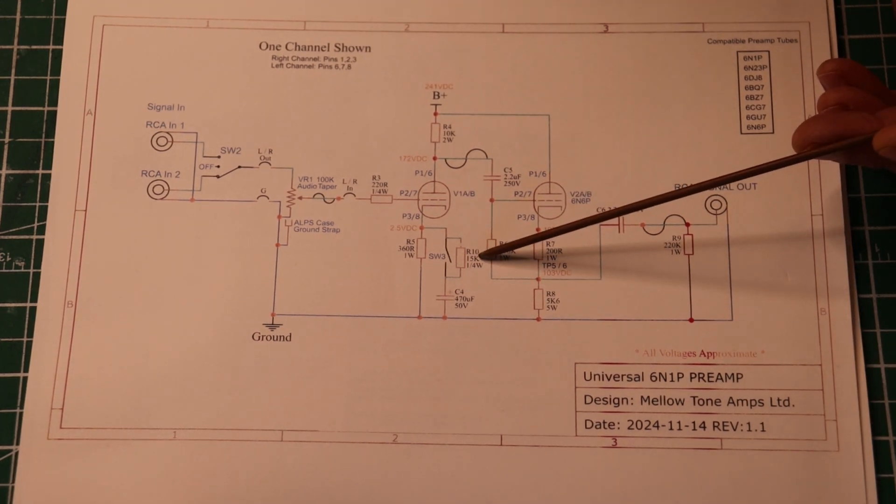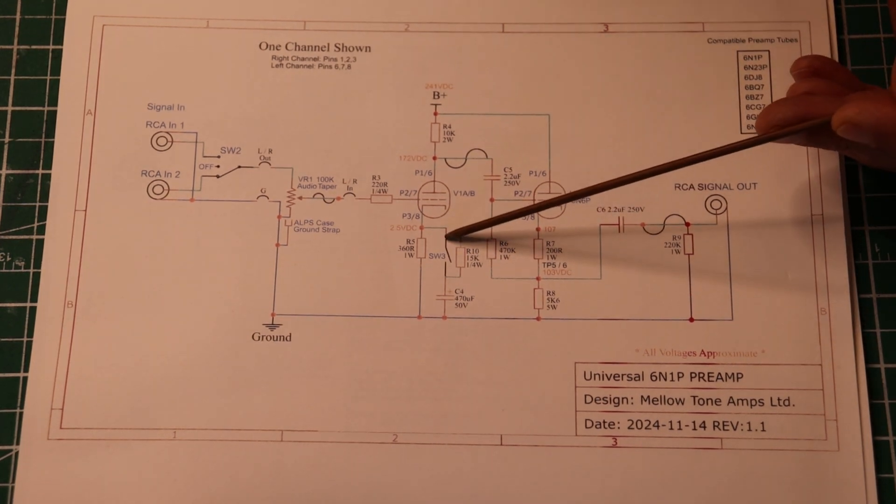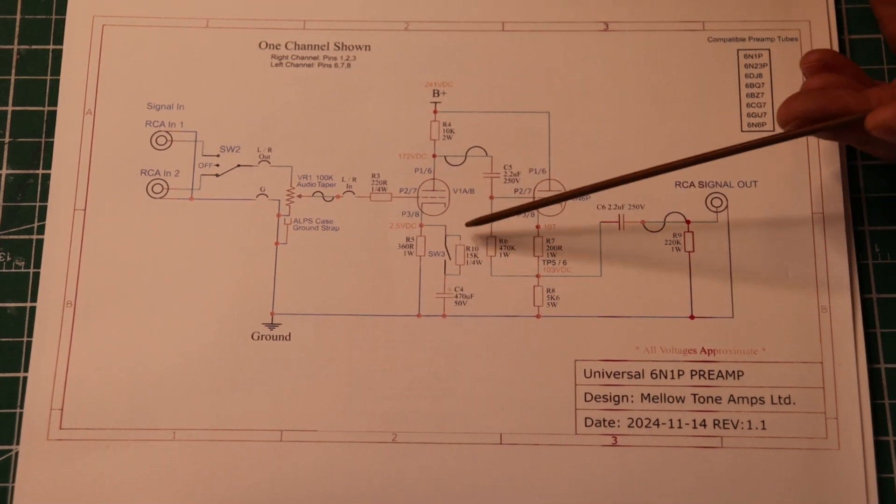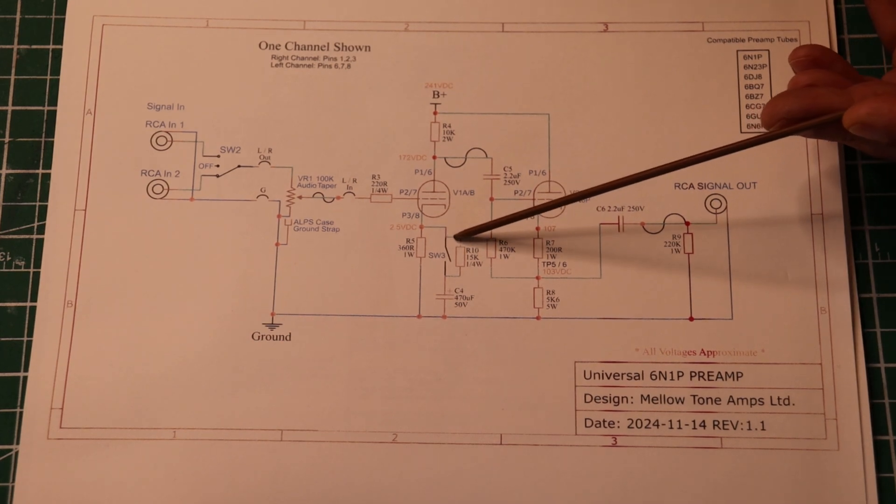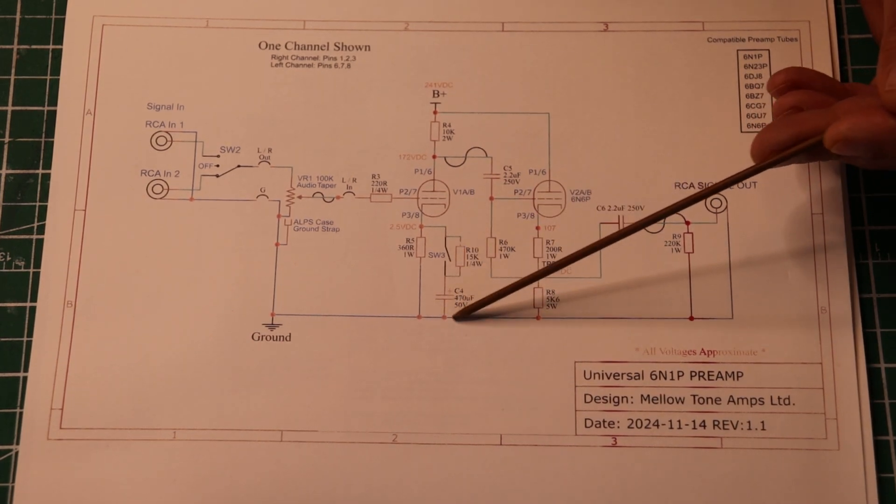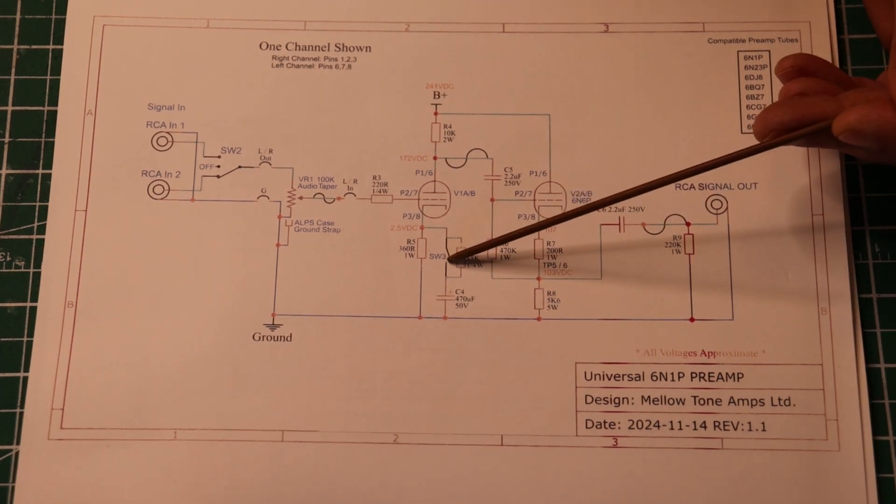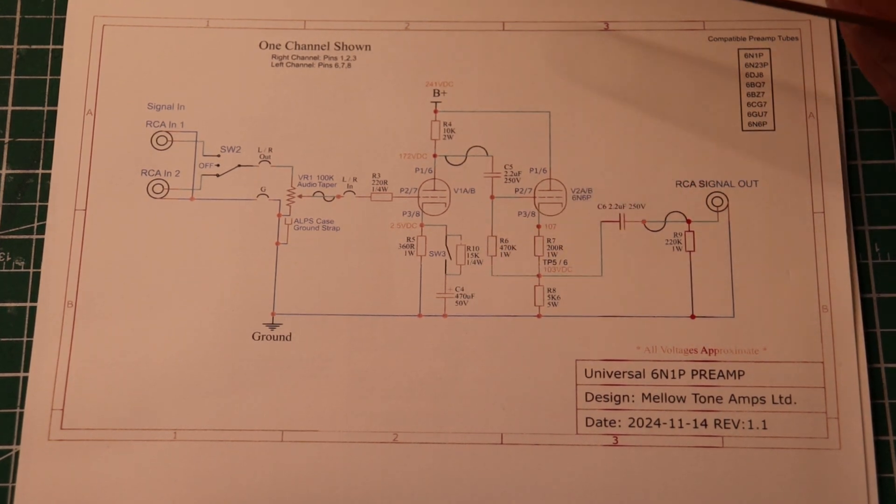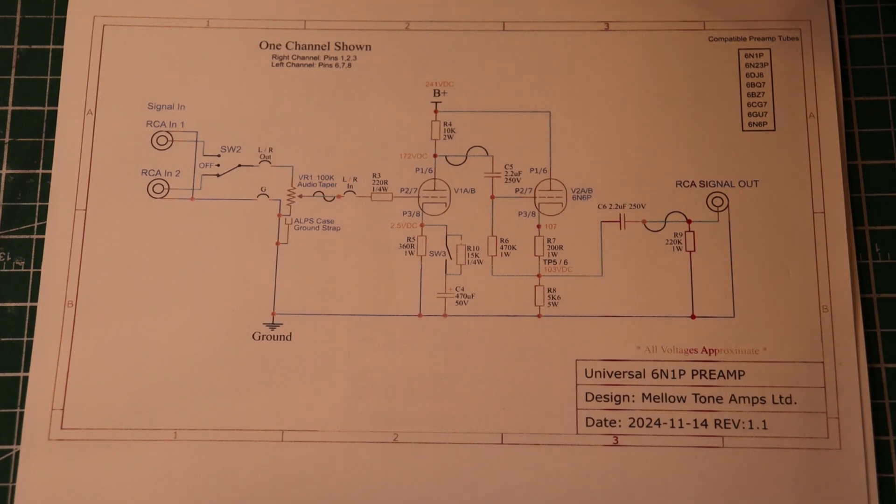This 15k quarter watt resistor is essentially a pop stopper. It's bypassing the switch with 15,000 ohms of resistance. What it does is it sneaks a little tiny bit of voltage across here to keep a charge on this cap so that when you engage it, particularly when you've just turned on the amp, you don't accidentally have a nice little pop which can be really annoying.